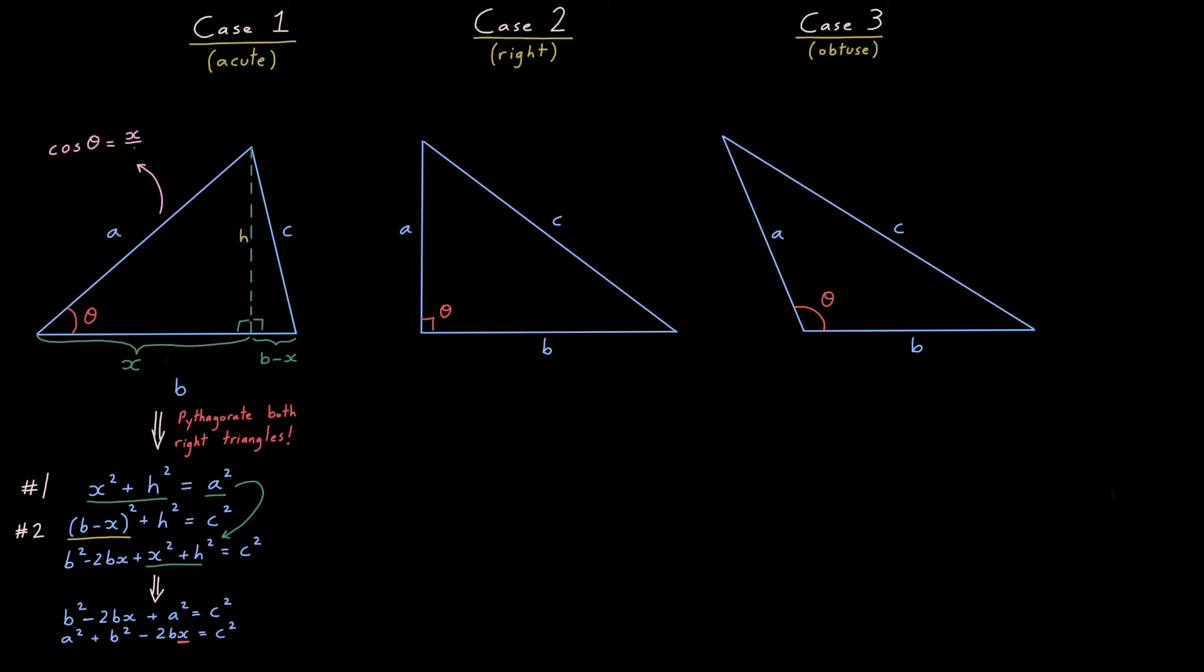Well, look once again at that left right triangle, cosine of theta adjacent over hypotenuse is X over A, multiply both sides by A and you have solved for X, supplying you with an opportunity to substitute down below, proving case one.